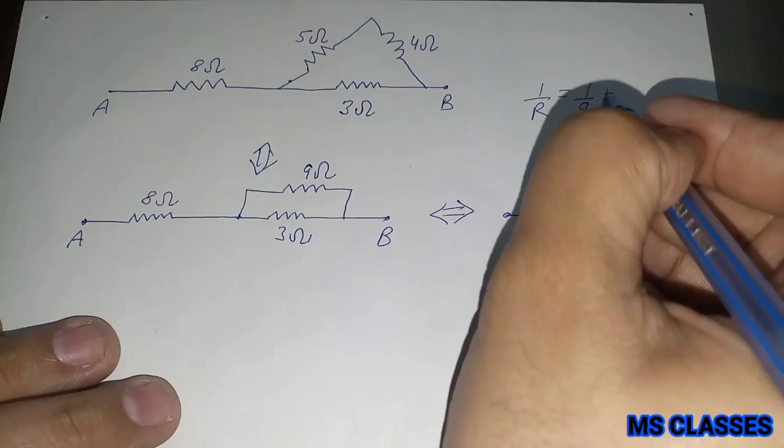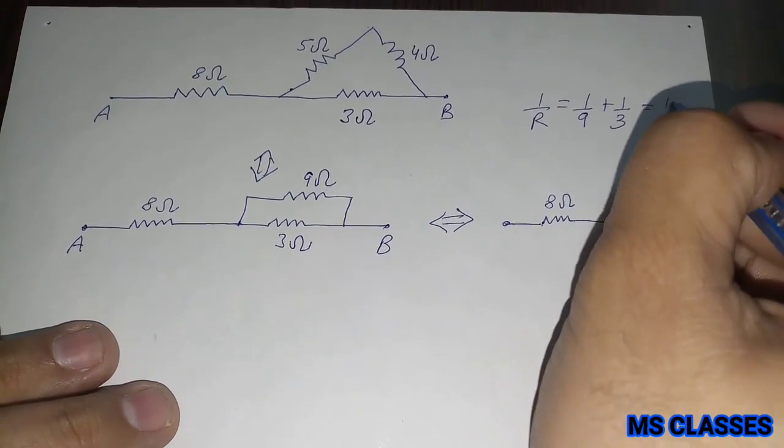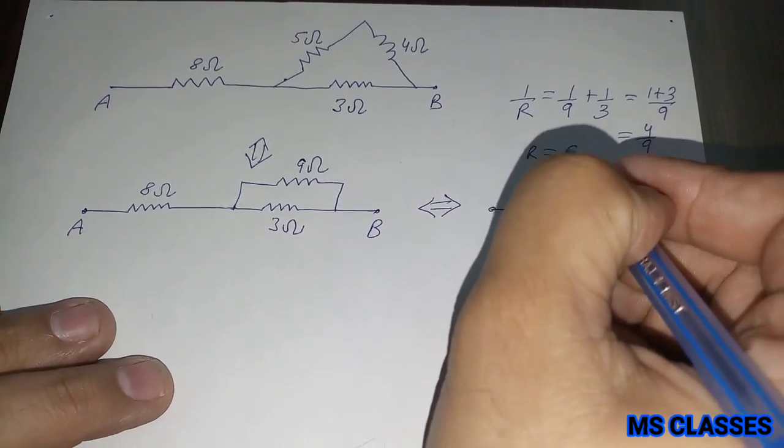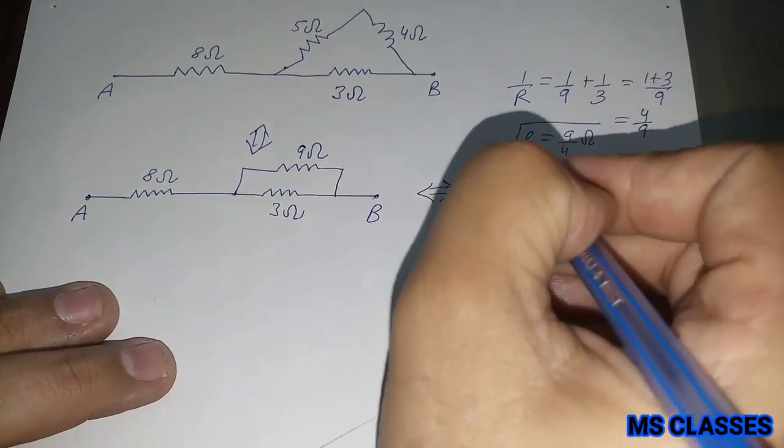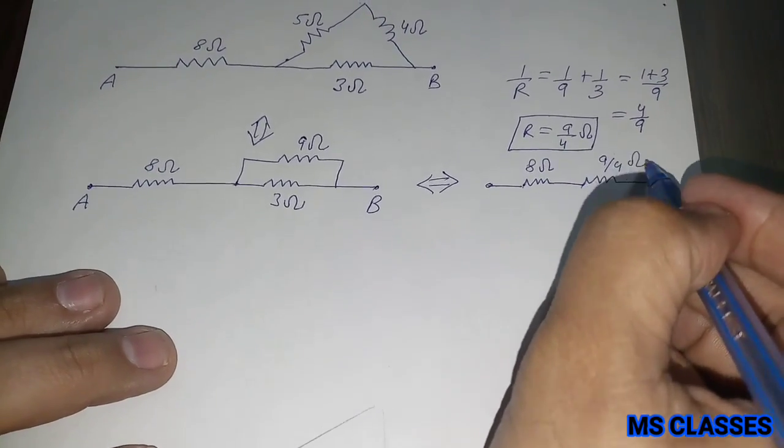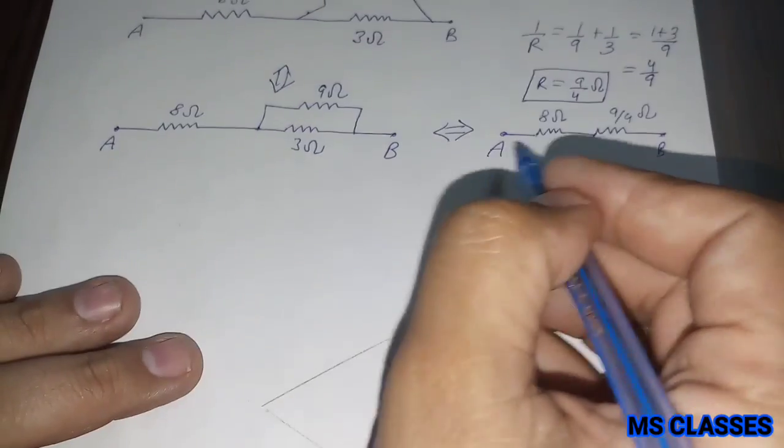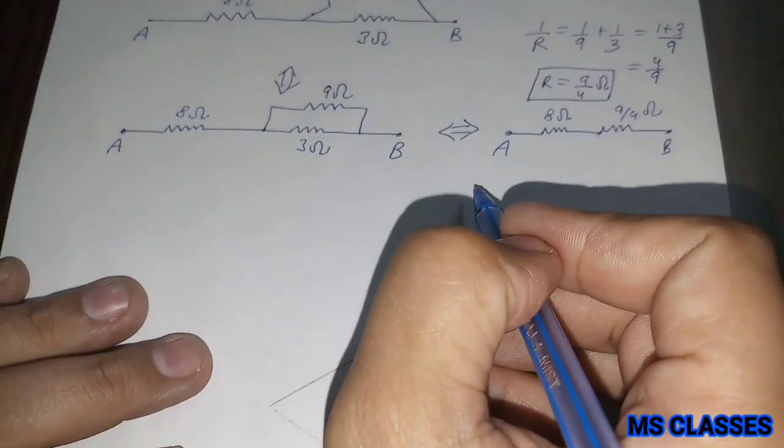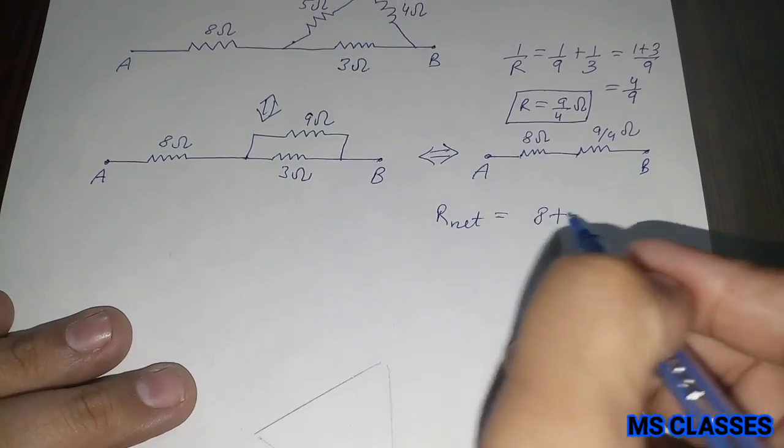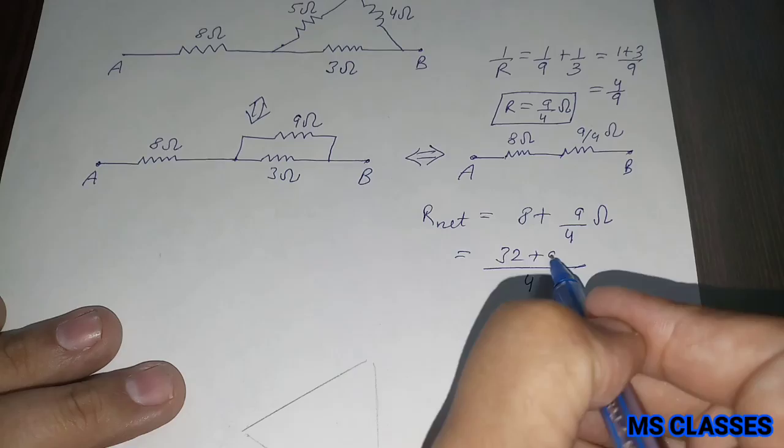So the net resistance would be 1 by 9 plus 1 by 3, which is 4 by 9. Therefore we can write it as 9 by 4. So this is 9 by 4 ohm. Now 8 and 9 by 4 both are connected in series, so net resistance would be 8 plus 9 by 4, which is 41 by 4 ohm. So the net resistance is 41 by 4 ohm.